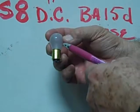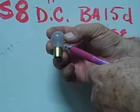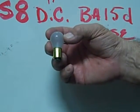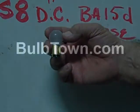This is an example of a number 308IF BA-15D based miniature bulb. Thank you.